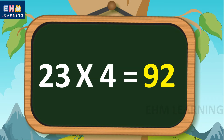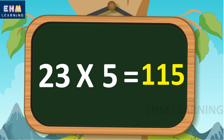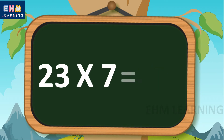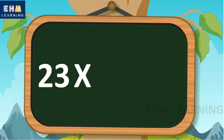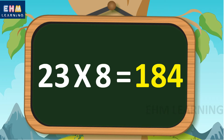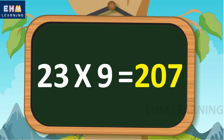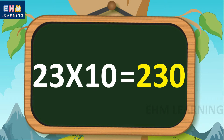23 4s are 92, 23 5s are 115, 23 6s are 138, 23 7s are 161, 23 8s are 184, 23 9s are 207, 23 10s are 230.